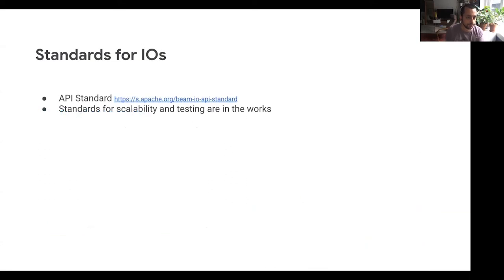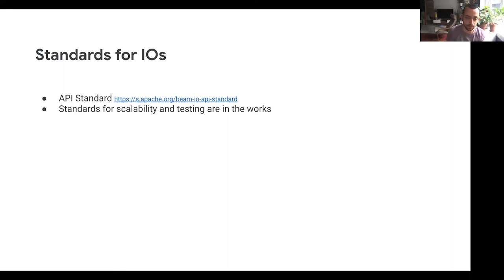We've worked with a few community members to define a standard API for IOs. Beam has lots of IOs and they are similar mostly, but we want to standardize even further. If you're interested in or building an IO for Beam, I recommend you check out this doc. We're also working on giving centers for scalability and testing, so that it's easier to communicate about how scalable a transform is when you're about to use it.